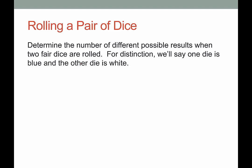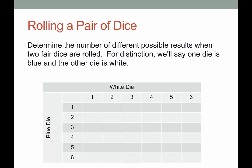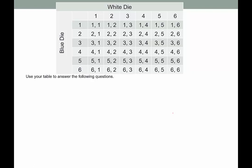One more example: determine the number of different possible results when two fair dice are rolled. For distinction, we'll say one die is blue and the other is white. Here's the table. When we fill it in, the first number indicates what we roll on blue and the second indicates white: 1-1, 1-2, and so on. Notice that we do include 1-1 because we are talking about two different dice being rolled — so the context is really important. The total combinations are six rows times six columns, so the answer is six times six, which is 36.